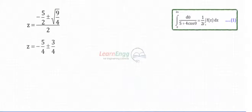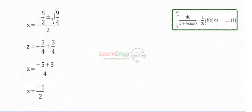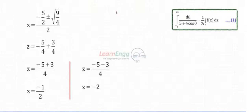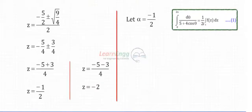z = −5/4 ± 3/4. By simplifying, we get z = −1/2 and z = −2. Let α = −1/2 and β = −2.